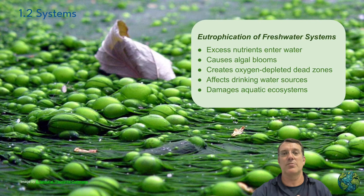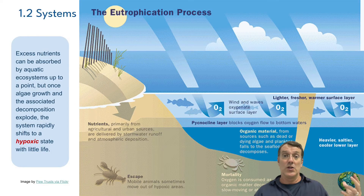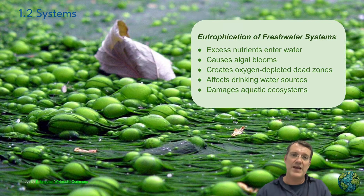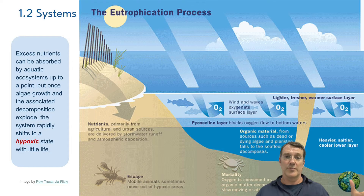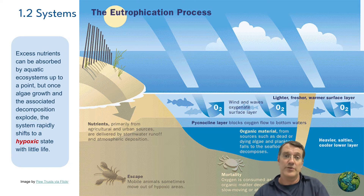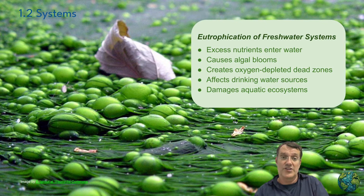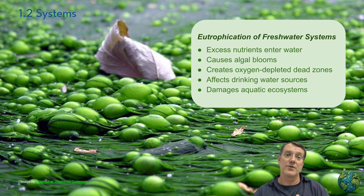A prime example of this is the eutrophication of freshwater systems. Large lakes can absorb excess nutrients up to a point, but once that critical threshold is crossed, it triggers rapid algal growth and decomposition, which contributes to oxygen depletion as the algae die and decompose, potentially creating a dead zone. The system shifts from a clear water state to a turbid, low-oxygen dead zone — a fundamentally different equilibrium that can be difficult to reverse.